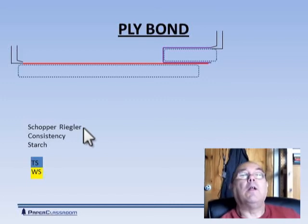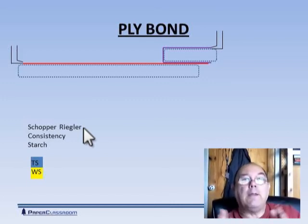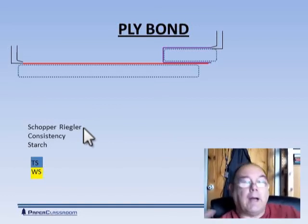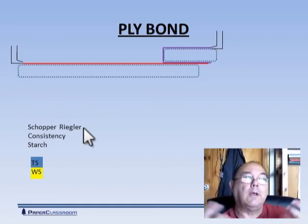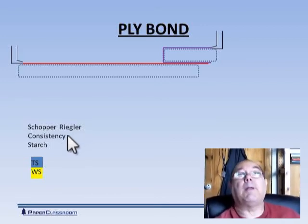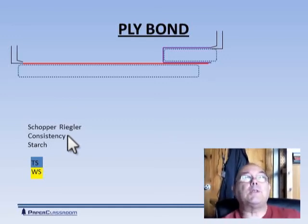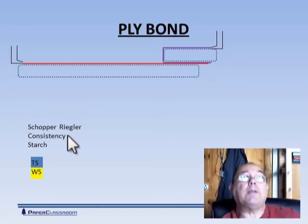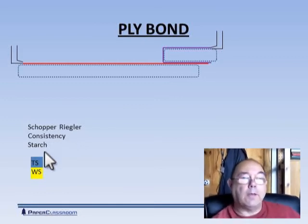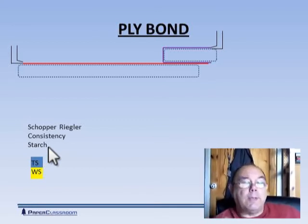Well, two of the main variables that will dictate how well these things bond together is the Schopper Riegler value. The closer the furnishes are in Schopper Riegler value, then the more likely you are to get a good bond. The further apart they are in Schopper Riegler values, the poorer will be the bond. The same applies to the consistency of the stock. The nearer the two consistencies are to each other, then the better bond you will get formed. And of course, if all else fails as a help or an insurance, you can always squirt a bit of starch into this nip here as the two plies come together to glue it together.